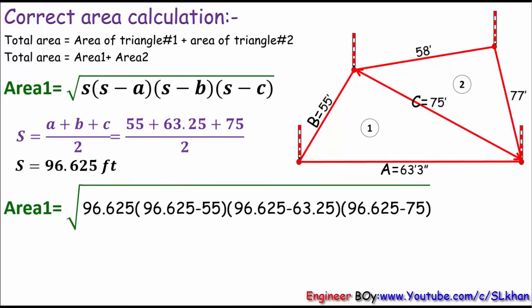Now let's calculate area of the second triangle. We'll do the same thing as we did for area of the first triangle. When you do calculation for area of the second triangle, you should end up with area equals 2036.026 square feet.